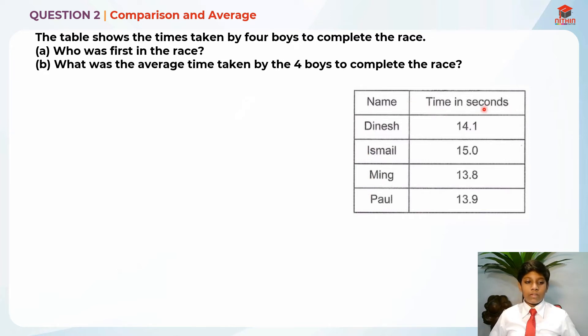The time in seconds: Dinesh took 14.1 seconds, Ismail took 15.0 seconds, Ming took 13.8 seconds, and Paul took 13.9 seconds. They are asking us for part A who was first in the race. Let me highlight it. Who was first?